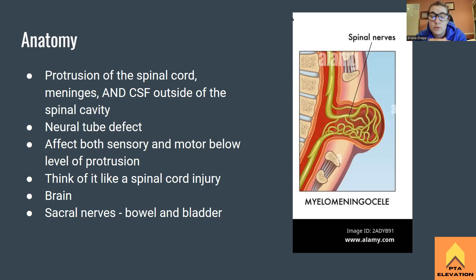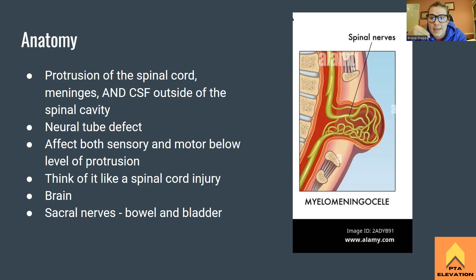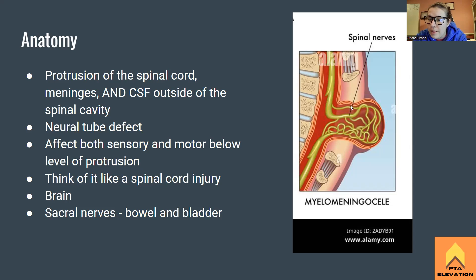This is going to be a neural tube defect — I'll explain how that works next. This is the most common, most severe, and most likely to show up on the exam. You're going to think of this like a spinal cord injury. This protrusion is essentially a lesion to the spinal cord — imagine how well it can work when it's all twisted up, folded in on itself, and pinched off. It's not going to work very well.